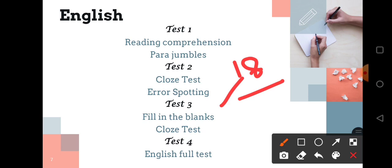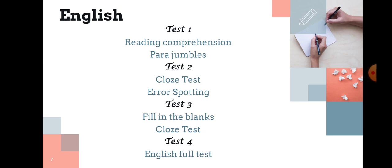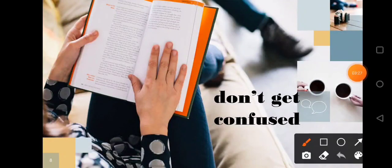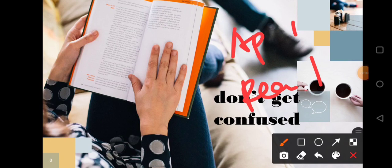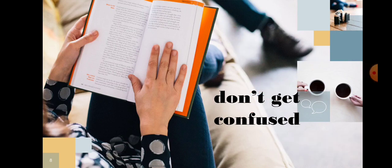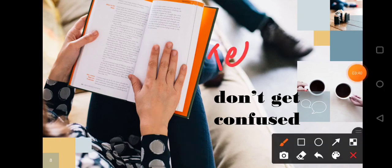Regarding the sequence of examination, for example, we conduct aptitude test number one, then English test number one, then reasoning test number one, then it continues. Don't worry and don't get confused about this. We inform well in advance about these things in the group clearly.